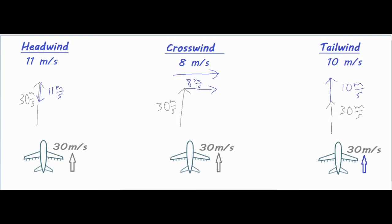I added all of them using the tip-to-tail method — wherever one vector ends, that's where the next one starts, and the order doesn't matter. For this one, if the 10 was on the bottom and the 30 was on top, it would still move up 40. For the crosswind problem, I went up first and then over to the right, but I could have started with the 8 and gone right first, then up 30, and still ended in the same spot.